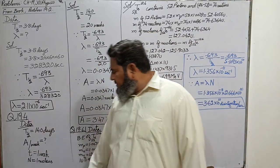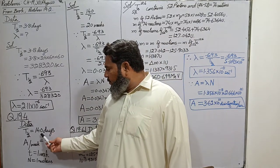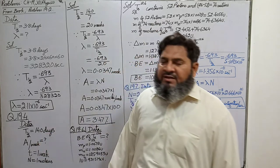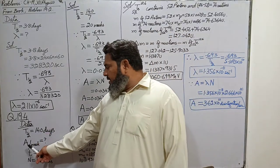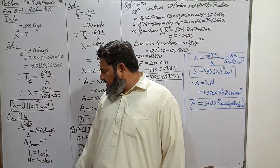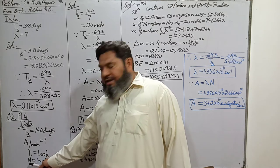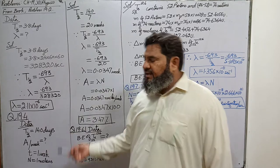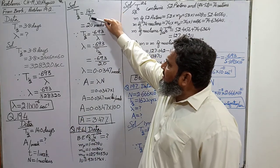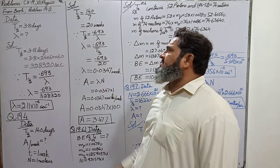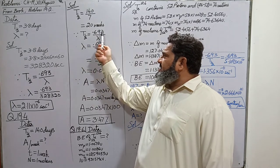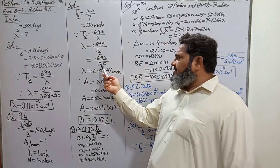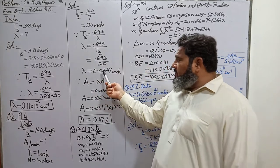Problem 19.4: the half-life of an element is 140 days. We have to calculate its activity per week for one nucleus. We convert T½ from days to weeks: 140 ÷ 7 = 20 weeks. Then λ = 0.693 / T½ = 0.693 / 20 = 0.0347 week⁻¹ as the decay constant.